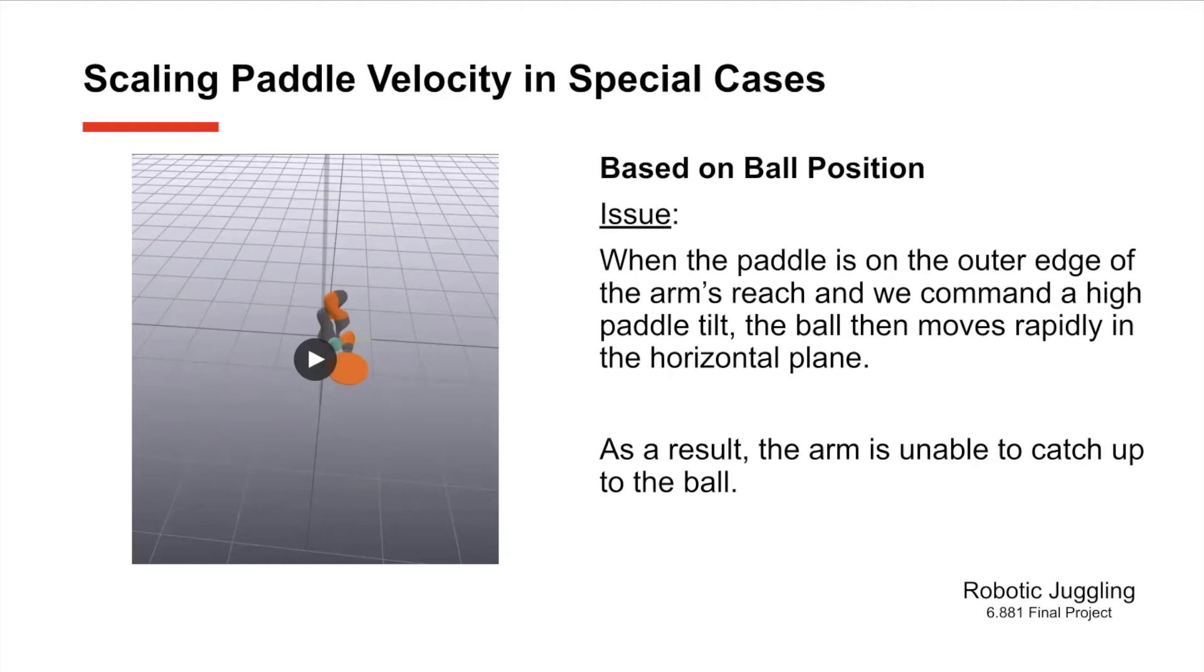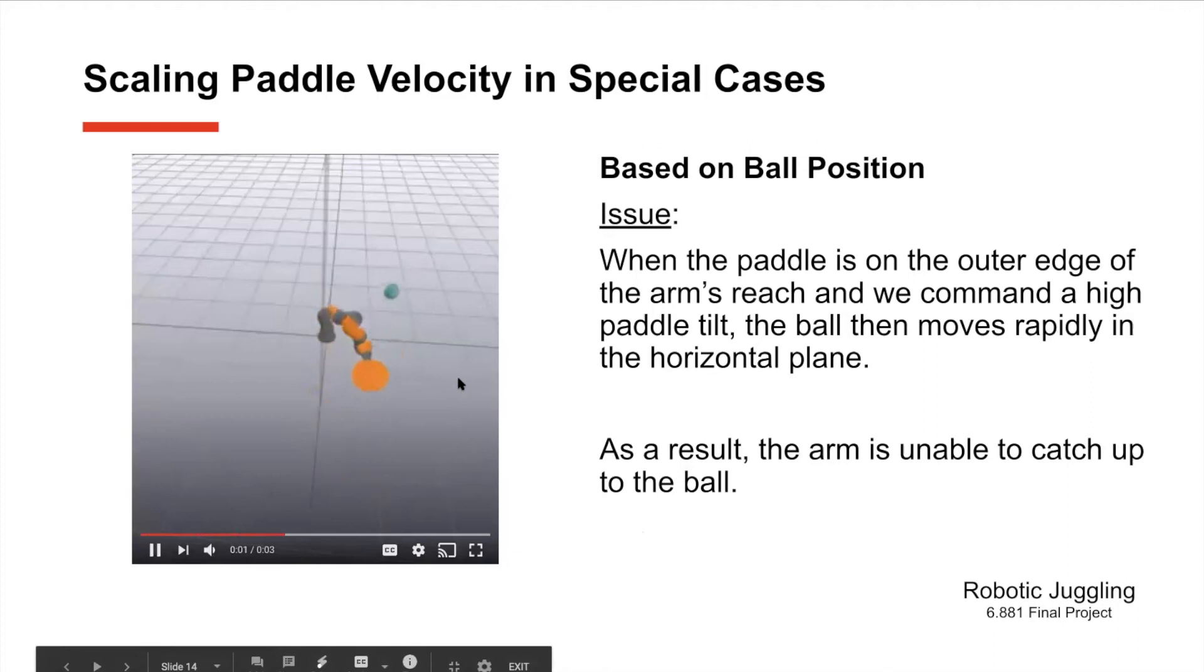The other special case where we would want to limit the paddle's commanded z velocity is when the offset of the ball from the center point gets larger. As the x and y values get farther away from that central point the commanded angle of the paddle gets larger and larger as we saw with the bowl function. However if the ball is bouncing fast that will mean our paddle will be going fast and if the paddle hits the ball at a fairly fast speed with an intense angle it is very likely that it will hit it too hard laterally and that the ball's lateral velocity will be too fast for the paddle to catch it. We can see an example of that here in this video. It tries to reach it, hits it fast and with an intense angle and it can't catch it.